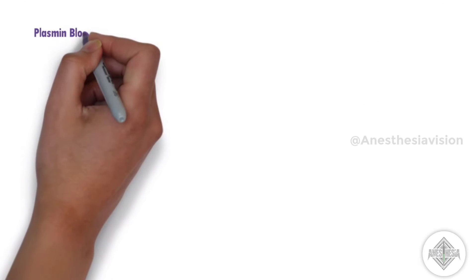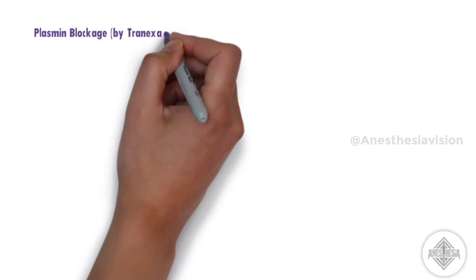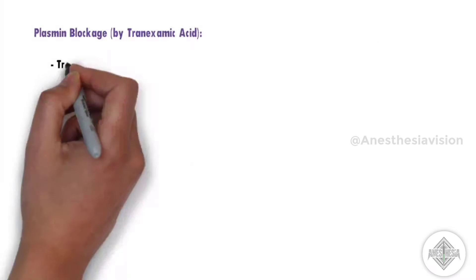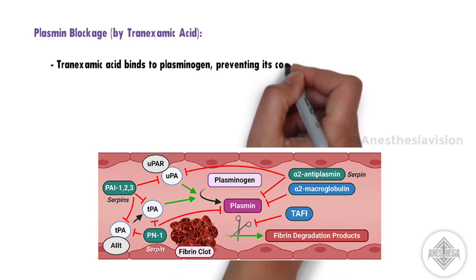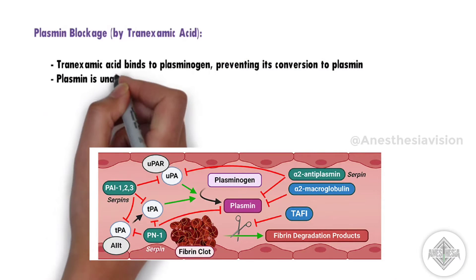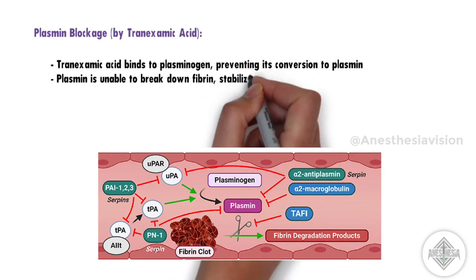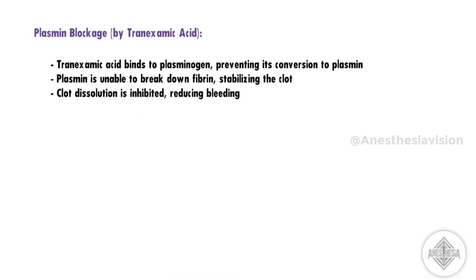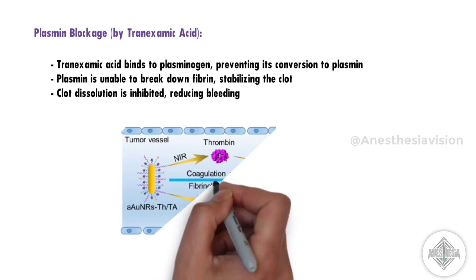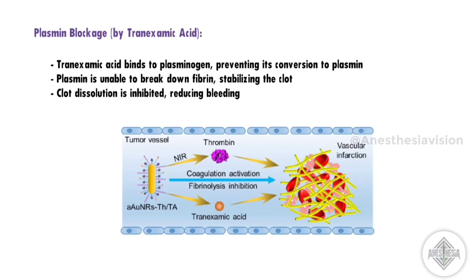Now let's see how tranexamic acid acts. Tranexamic acid binds to plasminogen, preventing its conversion to plasmin. So plasmin is unable to break down fibrin, stabilizing the clot. This inhibits clot dissolution and reduces bleeding.